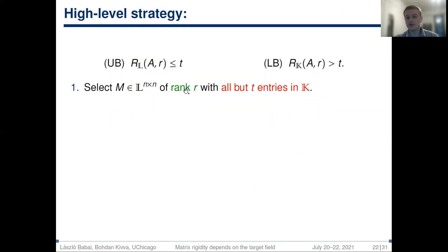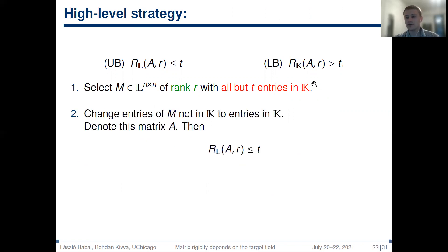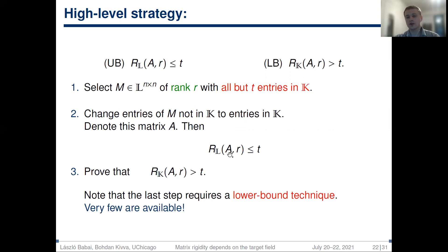To do this, we follow a high-level strategy. We start with a matrix M of rank r that has only a small number t of entries not in field K. Then by changing these t entries back to values in K, we obtain a matrix A such that rigidity over L for target rank r is at most t — we can simply undo those changes to recover a matrix of rank r. All that remains is to show that for some matrix of this form, rigidity over K for target rank r is strictly greater than t.